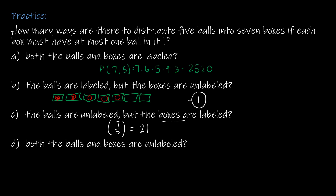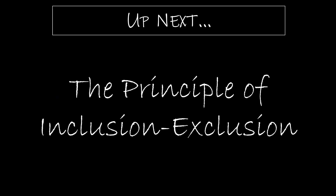For part D: both the balls and the boxes are unlabeled. This is the same situation as part B where the boxes are unlabeled, so there is just one way. Up next, we are going to revisit the principle of inclusion and exclusion.